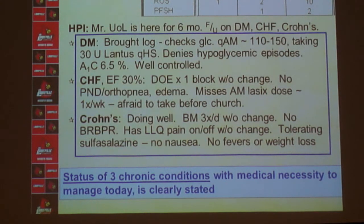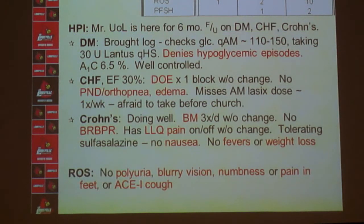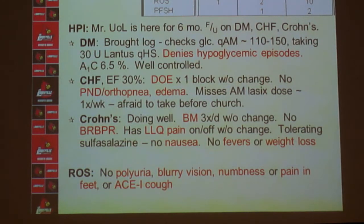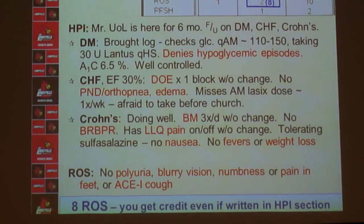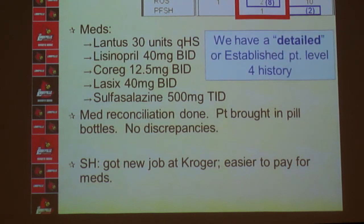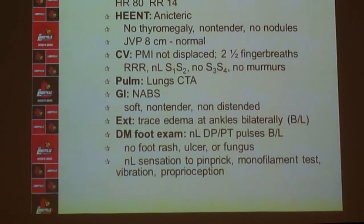For past medical, family, and social history, I've addressed two of the three categories. The HPI meets Level 5, the review of systems is Level 4, and the past medical/family/social history meets Level 5. Since you need to satisfy all three criteria at their lowest level, this is a Level 4 detailed history. For physical exam under the 1997 guidelines, acceptable bullets include one for constitutional (vitals), one for eyes, one for thyroid, one for palpating the heart, one for auscultating the heart, one for lungs, one for abdominal palpation, one for edema, plus pulses, skin, and neuro for the diabetic foot exam.